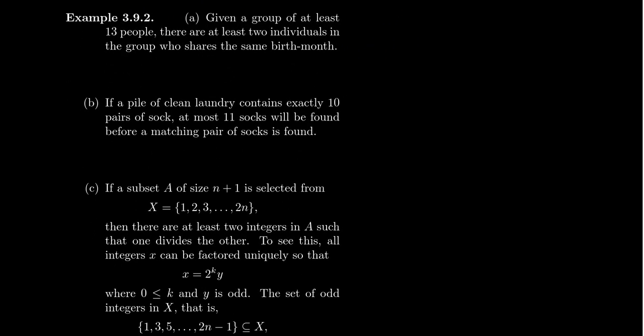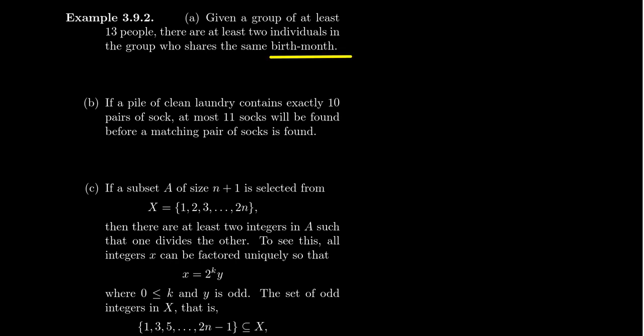Consider a group of at least 13 people — then at least two of those individuals have to share the same birth month. There are only 12 months in the year. Think of the 13 people as your 13 pigeons, and the 12 months of the year as your 12 pigeonholes. Then at least one box will have two pigeons inside of it, so they have to share a birth month.